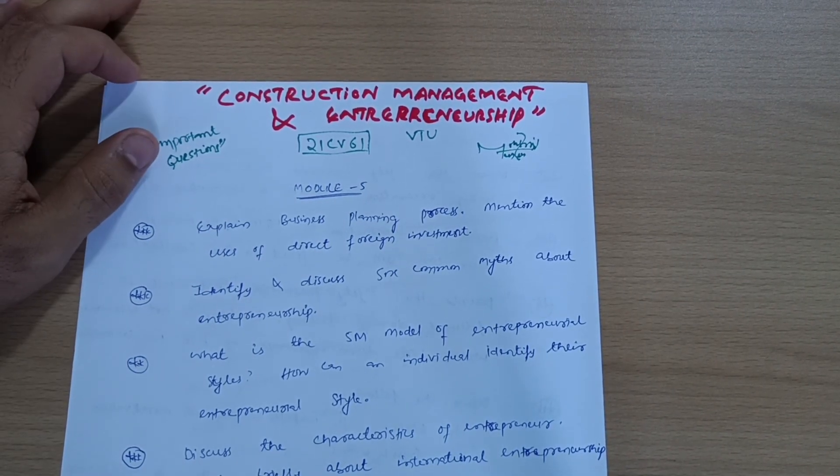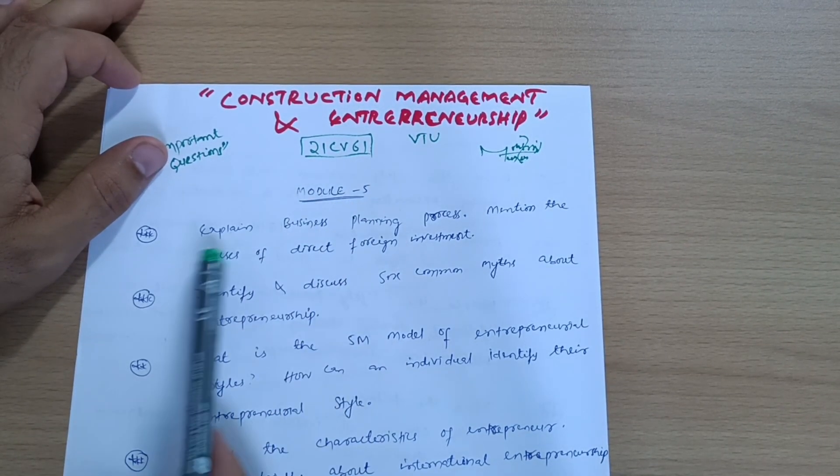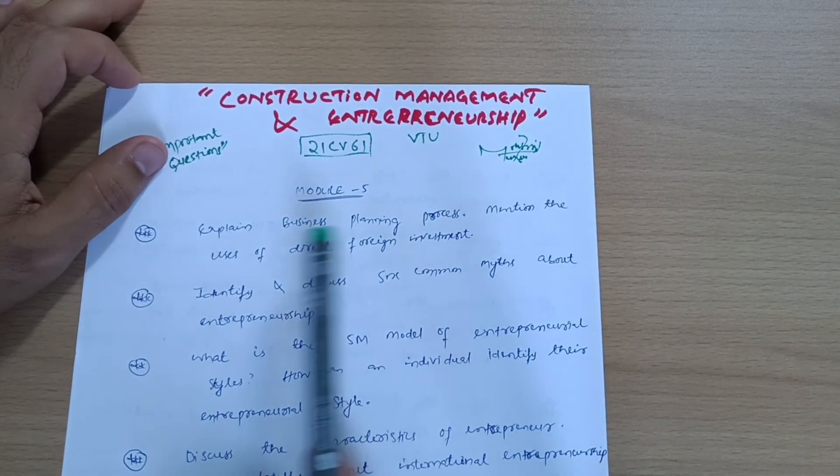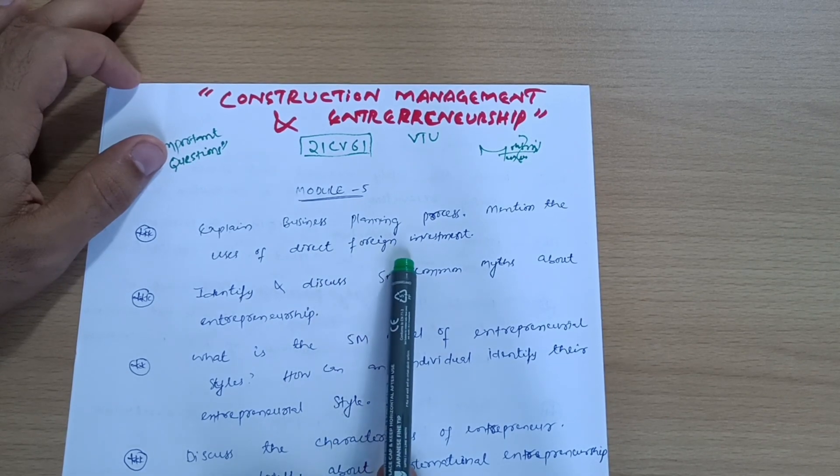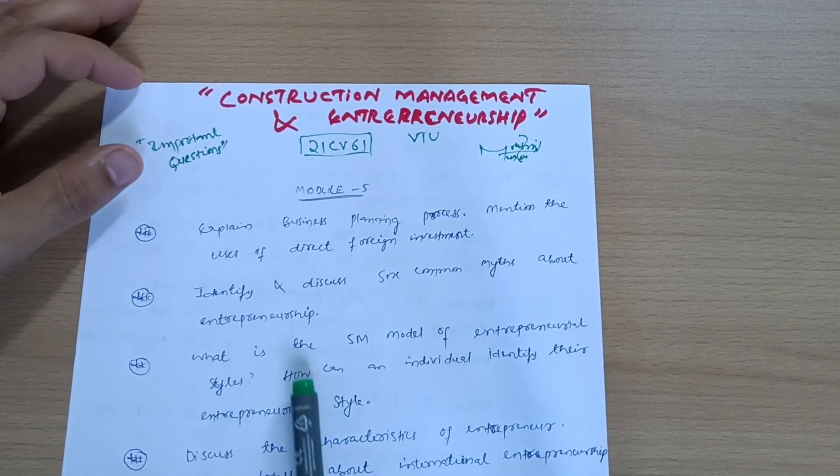First, let us discuss the theoretical portions. Let me discuss Module 5. Explain business planning process. Mention the uses of direct foreign investment and identify and discuss six common myths about entrepreneurship. What is the 5M model of entrepreneur styles? How can an individual identify their entrepreneur style?